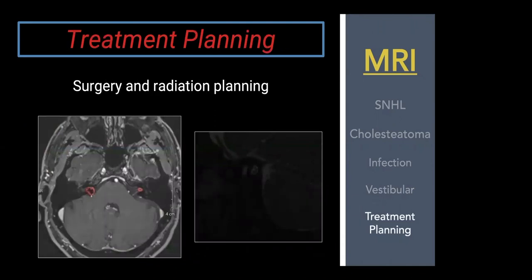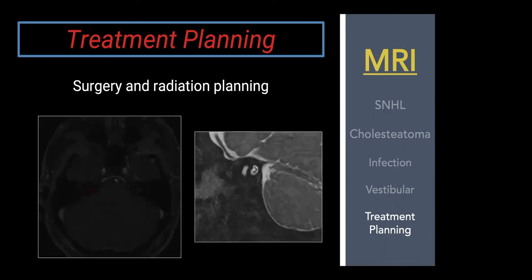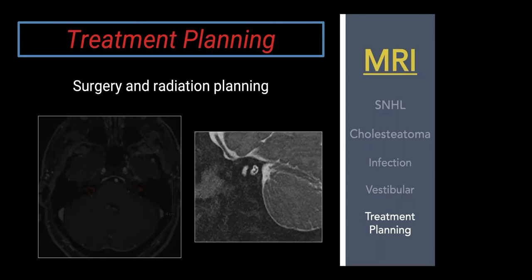For treatment planning, MRI is better than CT for following masses and tumors and for radiation planning. Here, bilateral vestibular schwannomas in a neurofibromatosis type 2 patient are contoured to track volumes and plan radiation. In another case — a child with congenital sensorineural hearing loss — the fluid-sensitive sequence is reformatted down the barrel of the IAC. We look for the four main nerves: a clear facial nerve, superior and inferior vestibular nerves are present, but virtually no cochlear nerve, which has significant treatment implications.